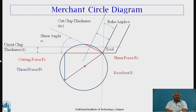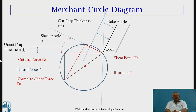This angle can be none other than the shear angle, denoted by phi. We then draw a line perpendicular to the shear force which joins the resultant force, and this normal to the shear force is denoted by Fn. The resultant of shear force and normal to shear force is also the resultant of cutting force and thrust force, as can be understood from the diagram. We measure their magnitudes and transform them into newtons or kg as per the scale adopted. The angle between cutting force and shear force gives us the shear angle.